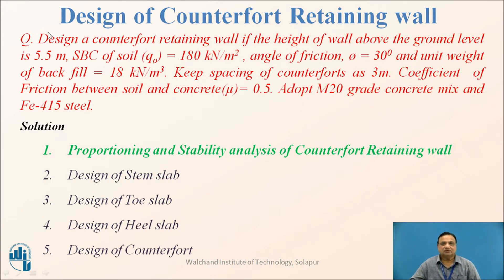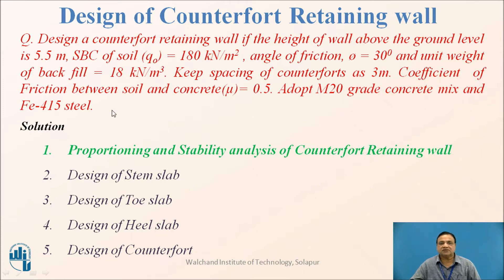This is a design example: design a counterfoot retaining wall where the height of the wall above ground level is 5.5 meters, SBC of soil is 180 kN/m², angle of internal friction is 30 degrees, unit weight of backfill is 18 kN/m³, spacing is 3 meters, and coefficient of friction between soil and concrete is 0.5. Adopt M20 concrete mix and Fe 415 steel.